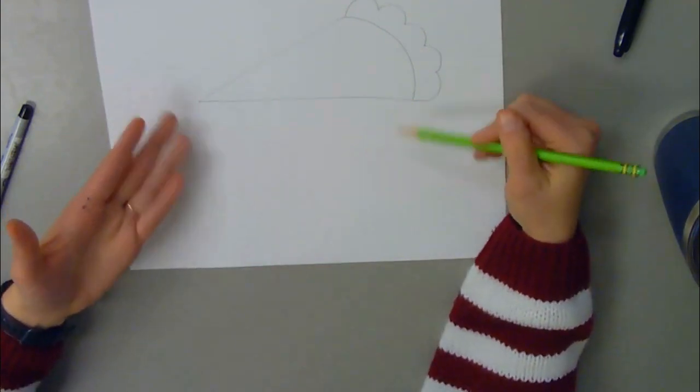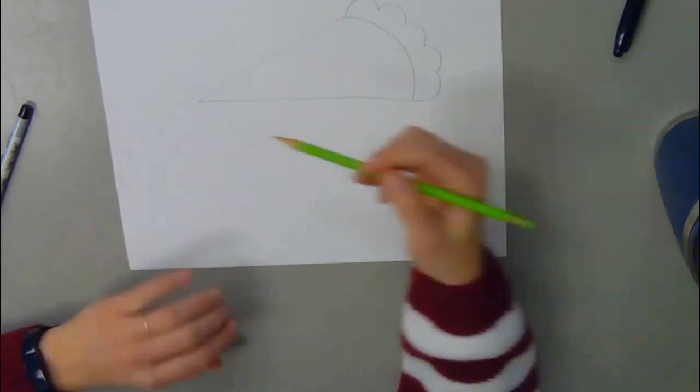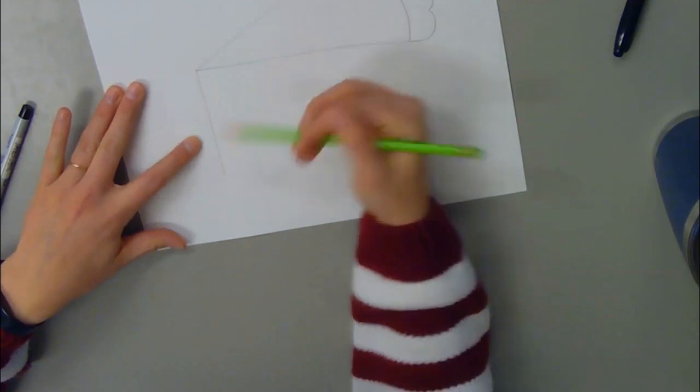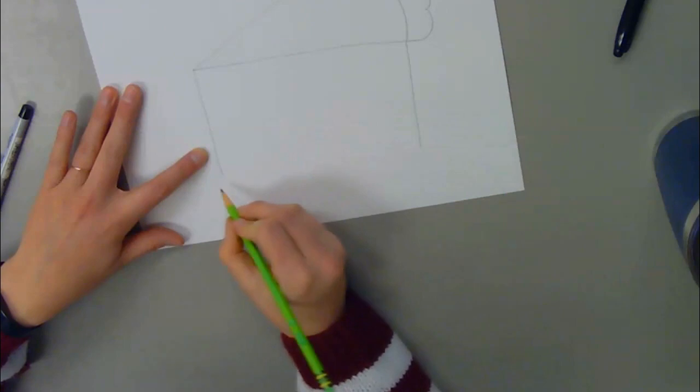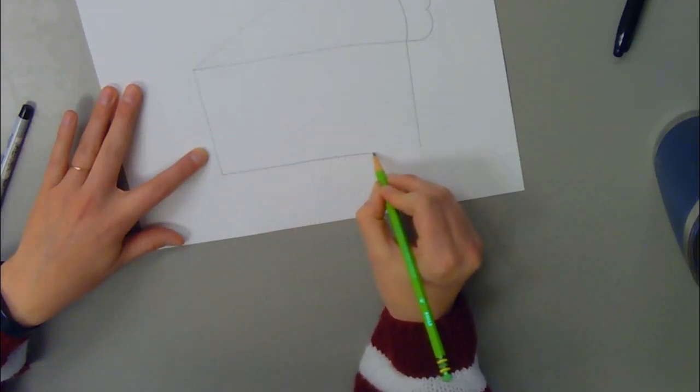When I draw the side of the slice, that's just going to be a rectangle. So I'm going to draw two vertical lines straight down. I want to make my pie slice nice and thick here and then a line straight across.